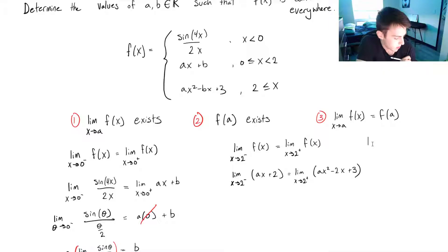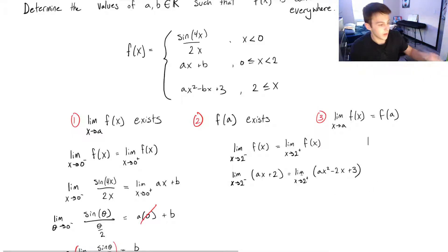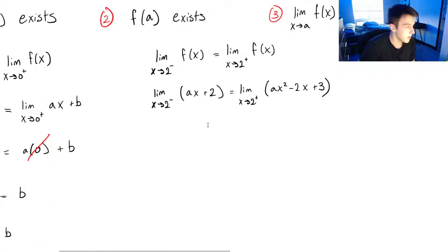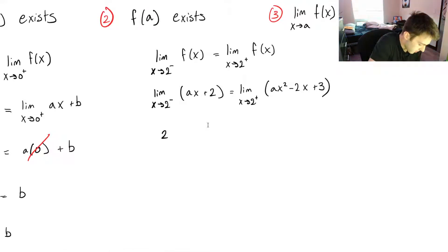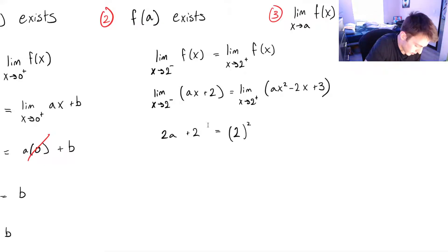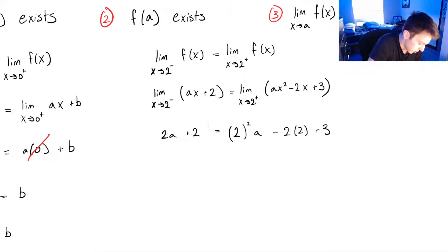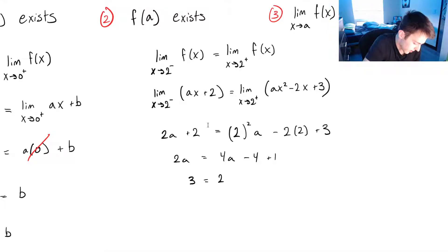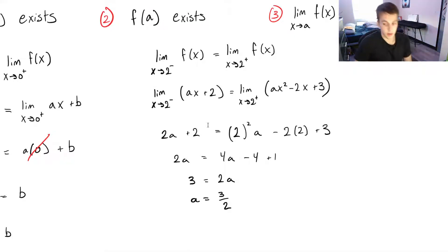Since we just have polynomials, we can plug in x=2 directly. Left side: 2A + 2. Right side: A(2²) − 2(2) + 3 = 4A − 4 + 3 = 4A − 1. Setting them equal: 2A + 2 = 4A − 1, so 3 = 2A, giving A = 3/2.